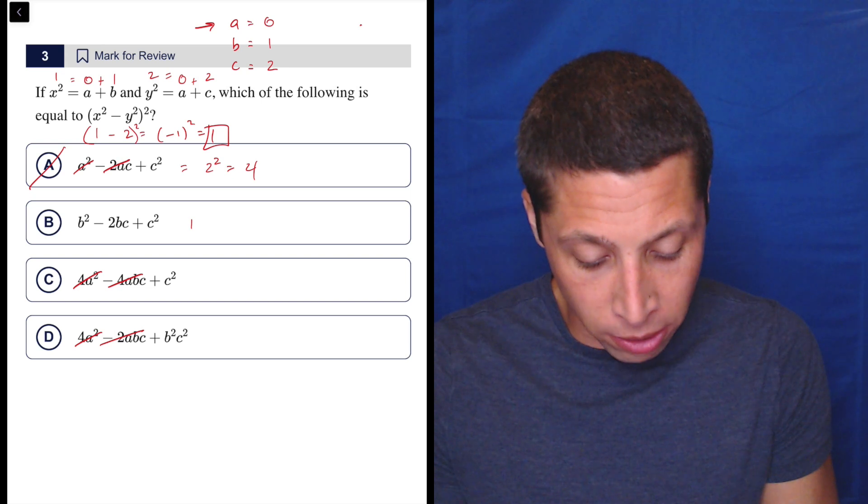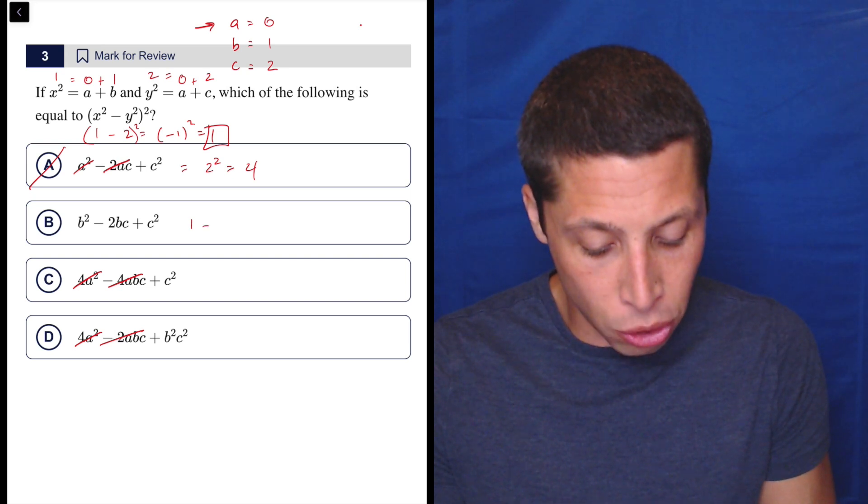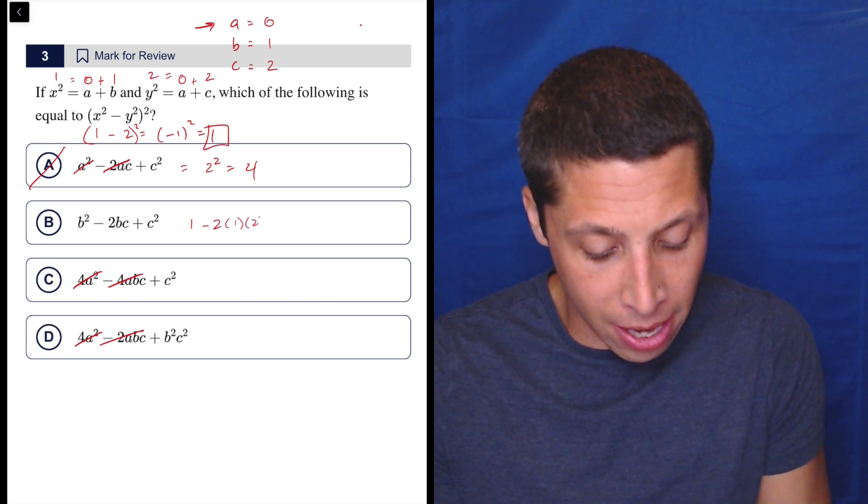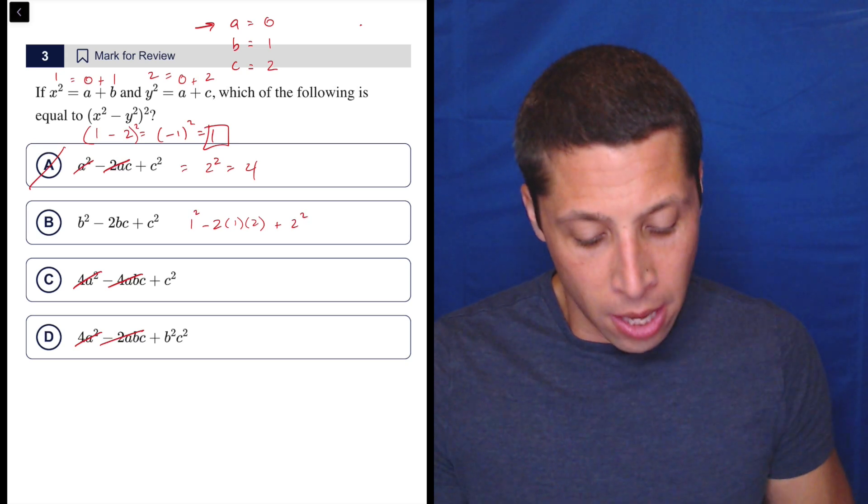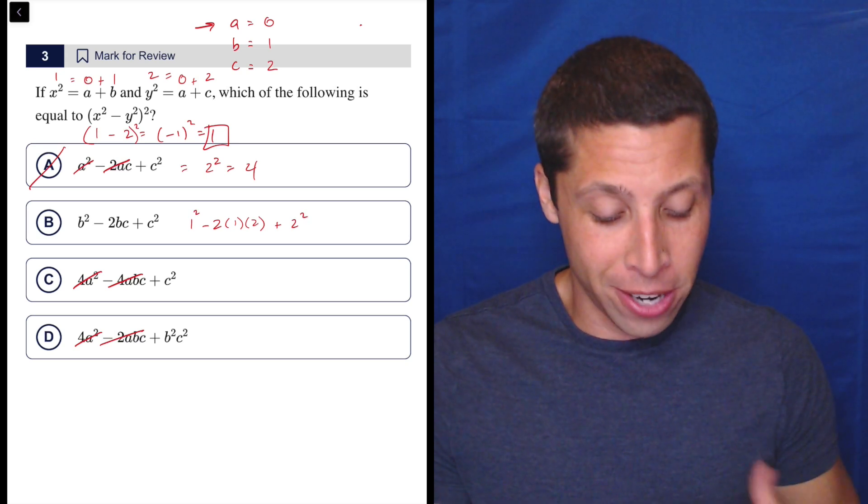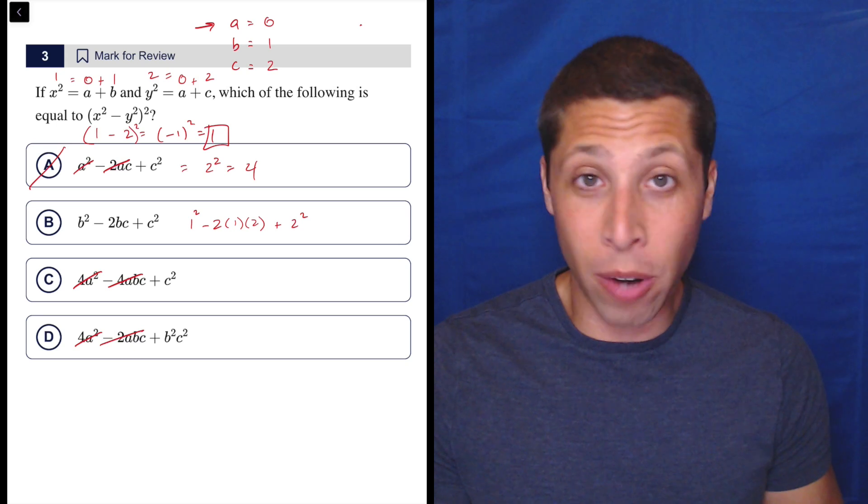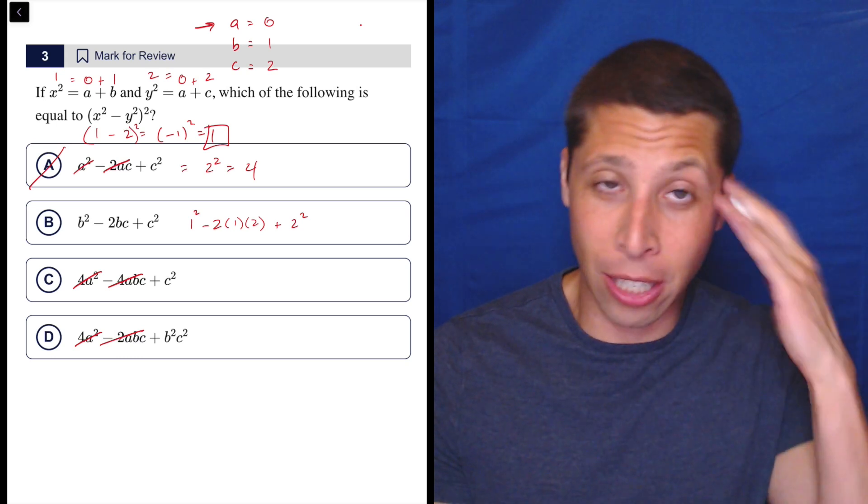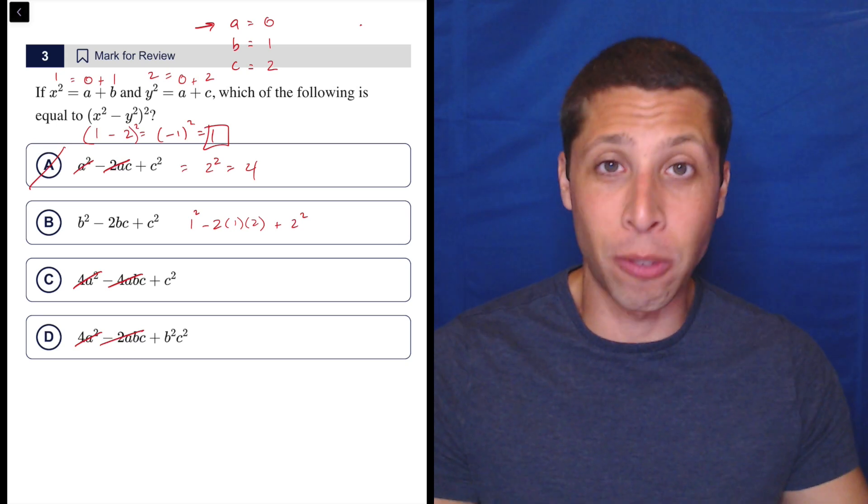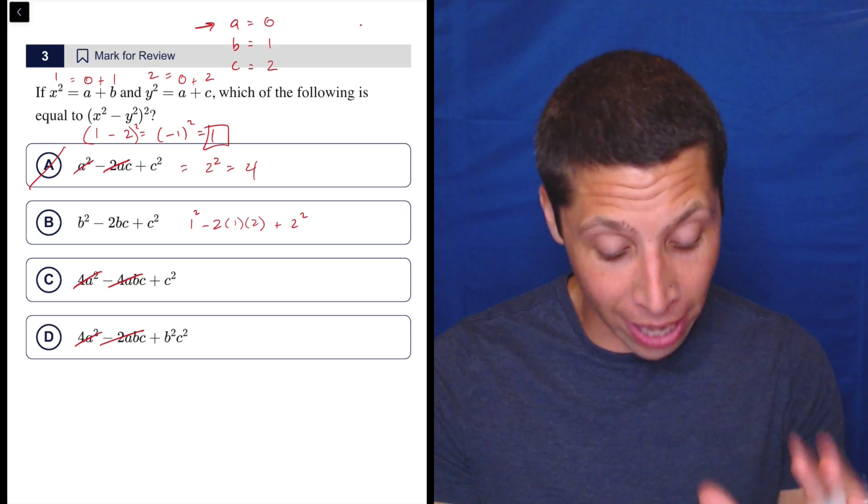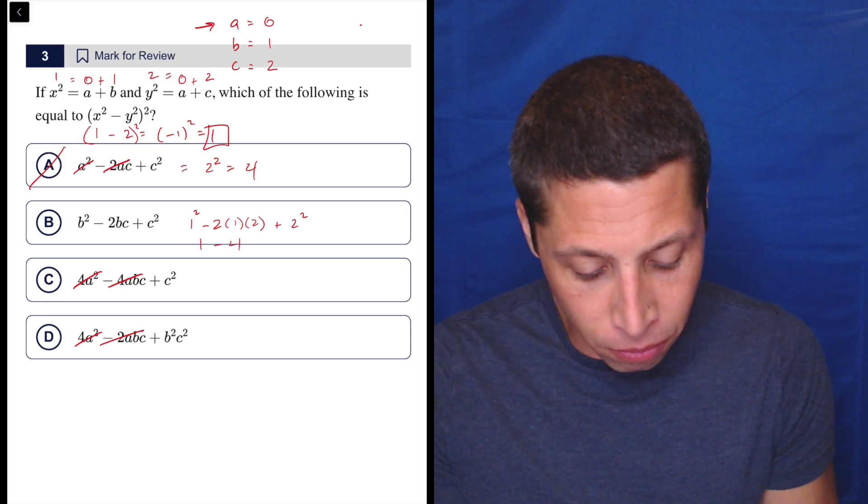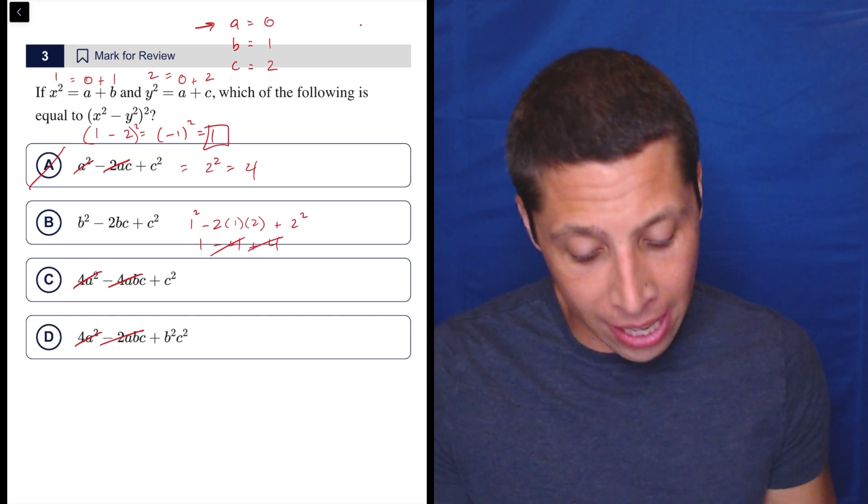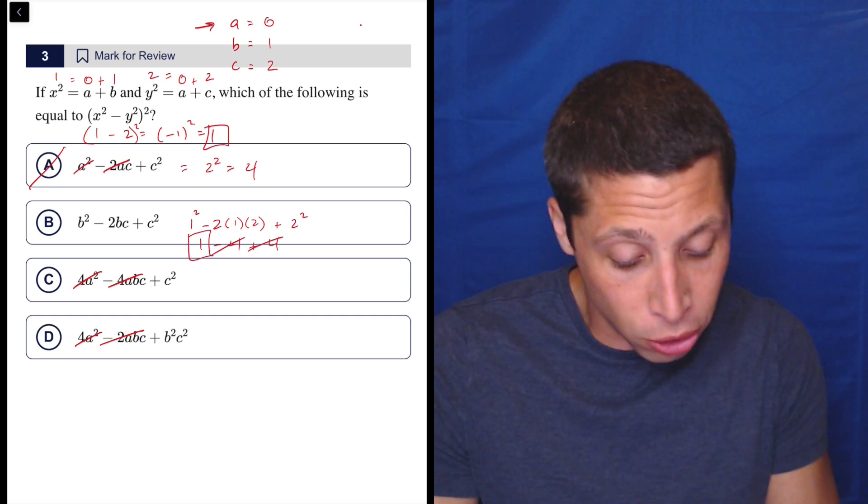1 is B. So that's 1 squared is 1 minus 2 times 1 times 2 plus 2 squared. So this is where it gets tricky. We have a lot of letters flying around. So we got to keep track of everything. I would definitely be doing scratch paper here. For a lot of arithmetized questions, I can do it in my head because X is 0 and that's all I have to worry about. Here, there's too much. So I got to do it this way. So this becomes 1 minus 4 plus 4. So the 4s are going to cancel. That leaves me with 1. That looks good.